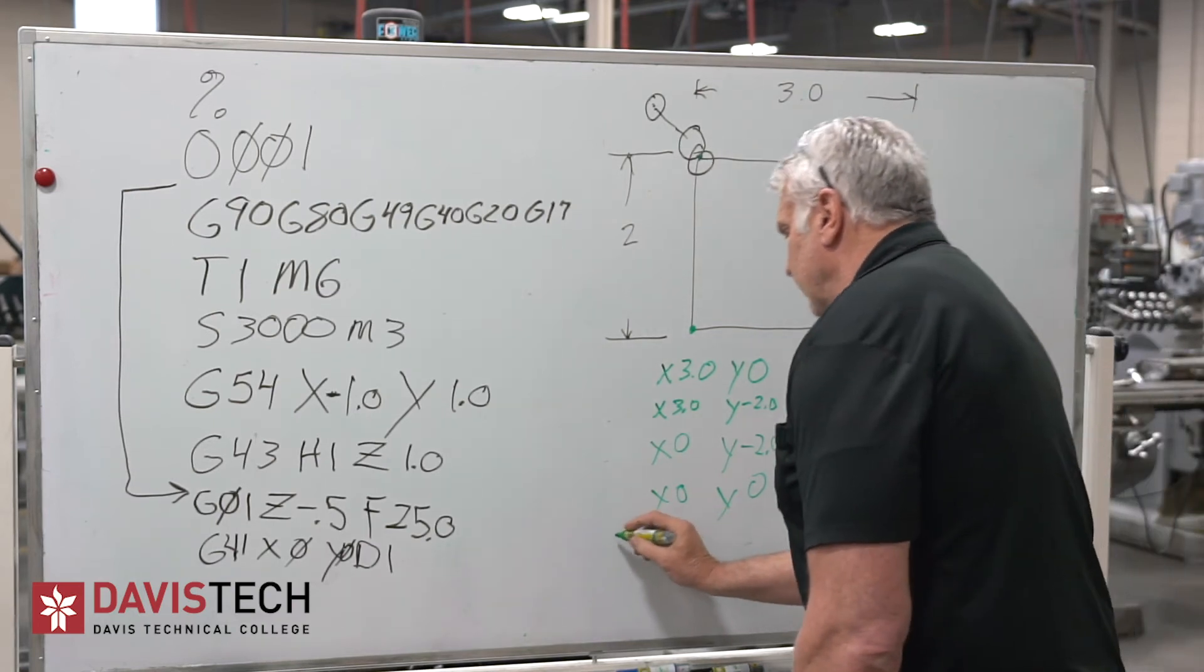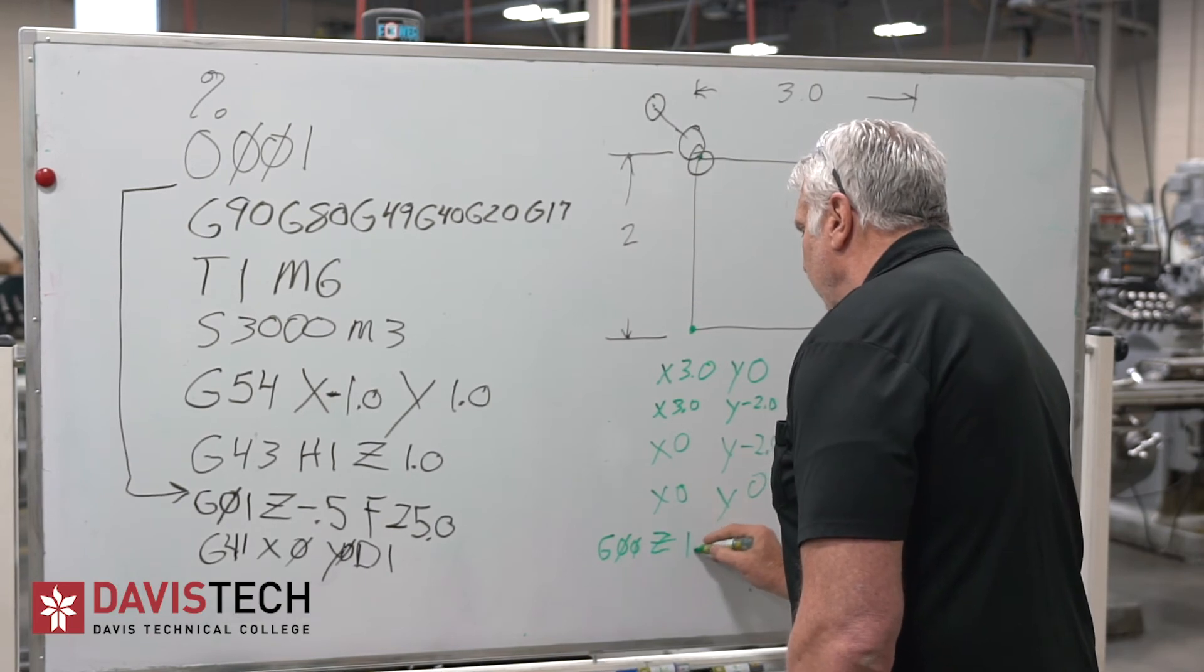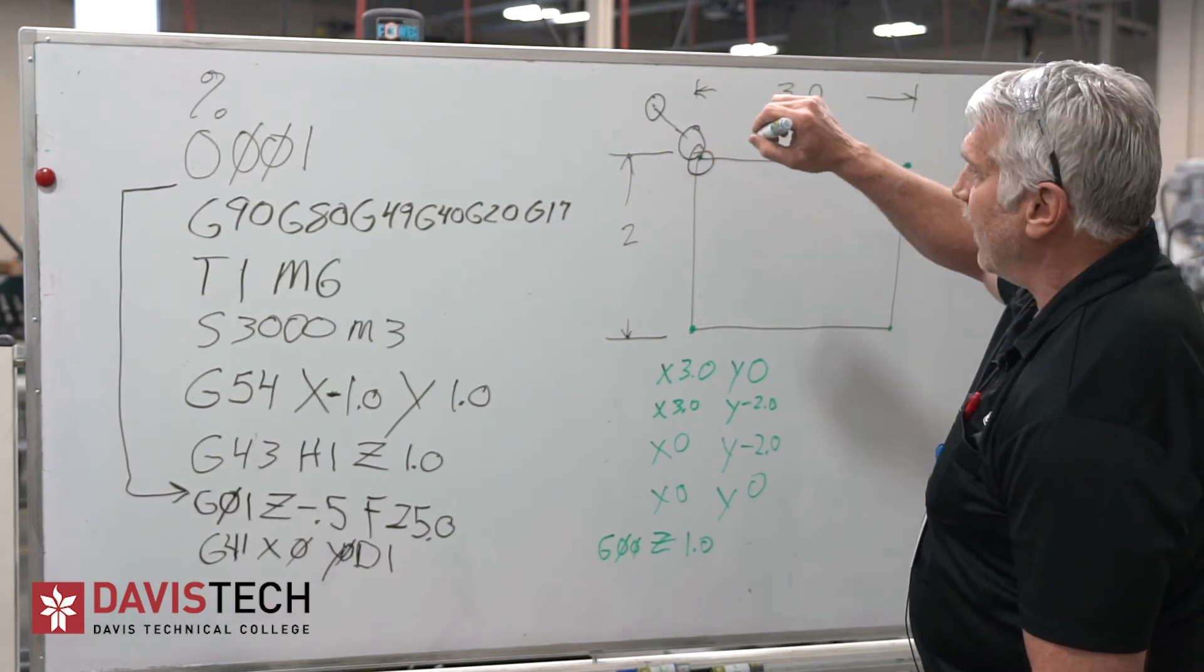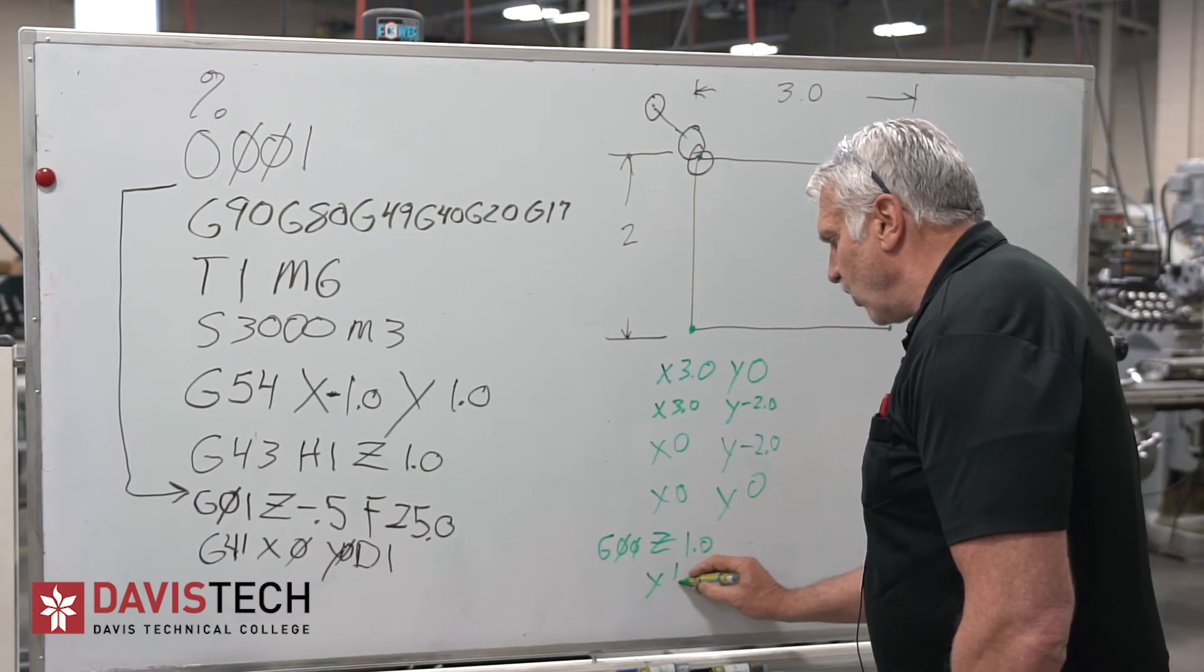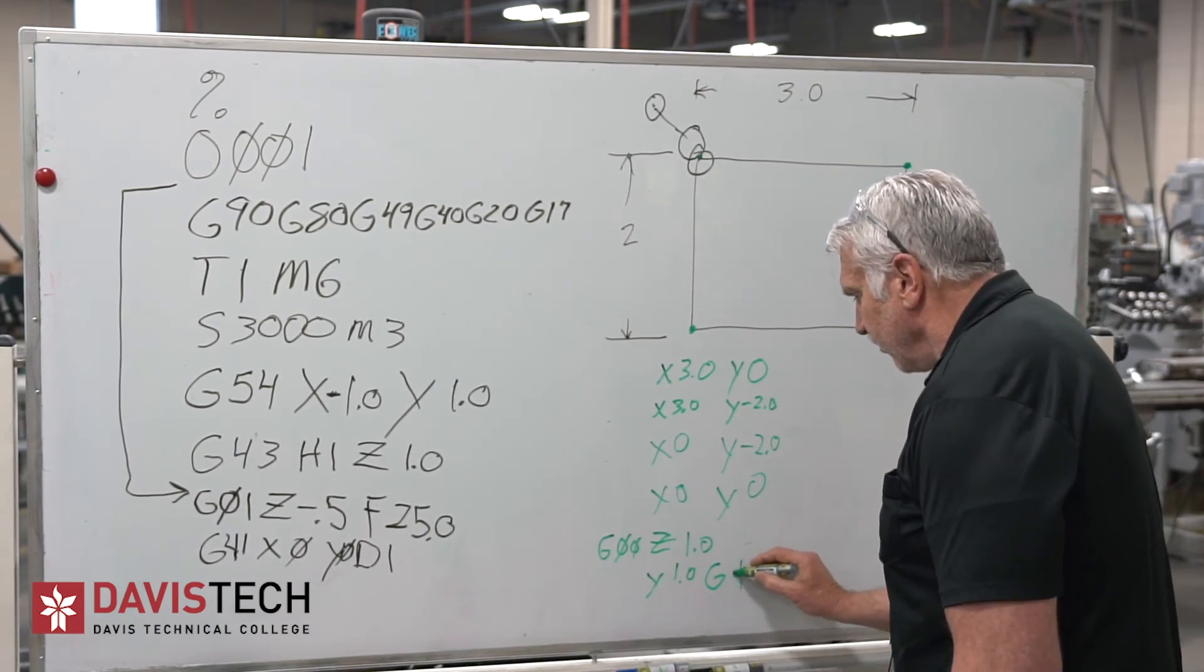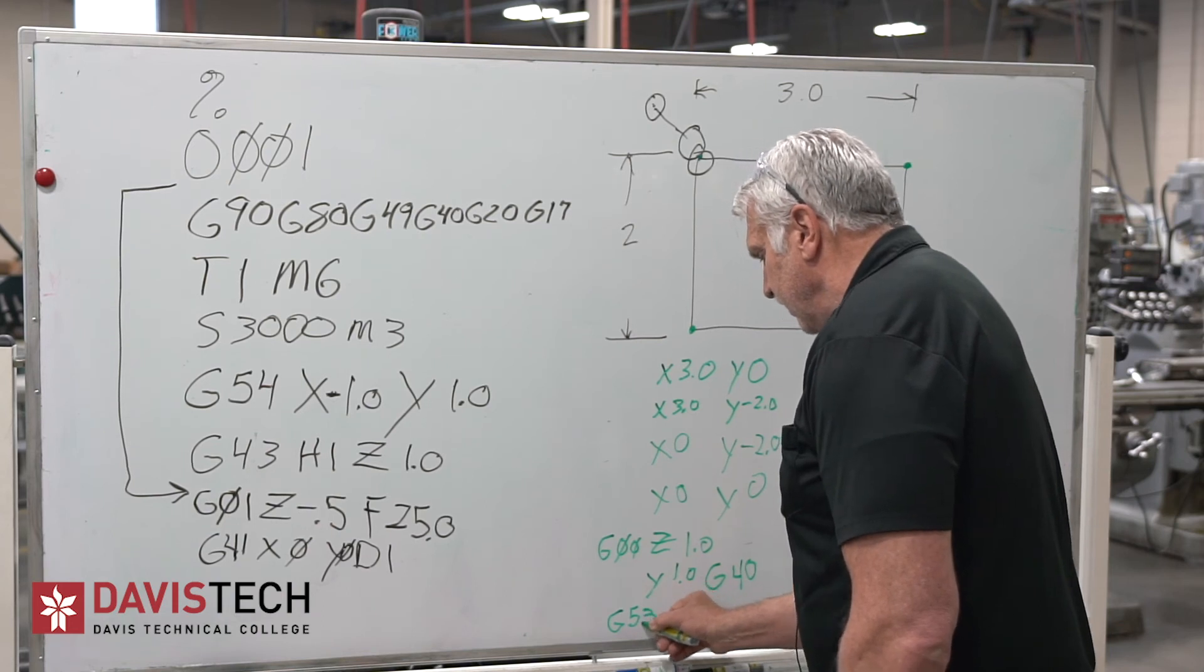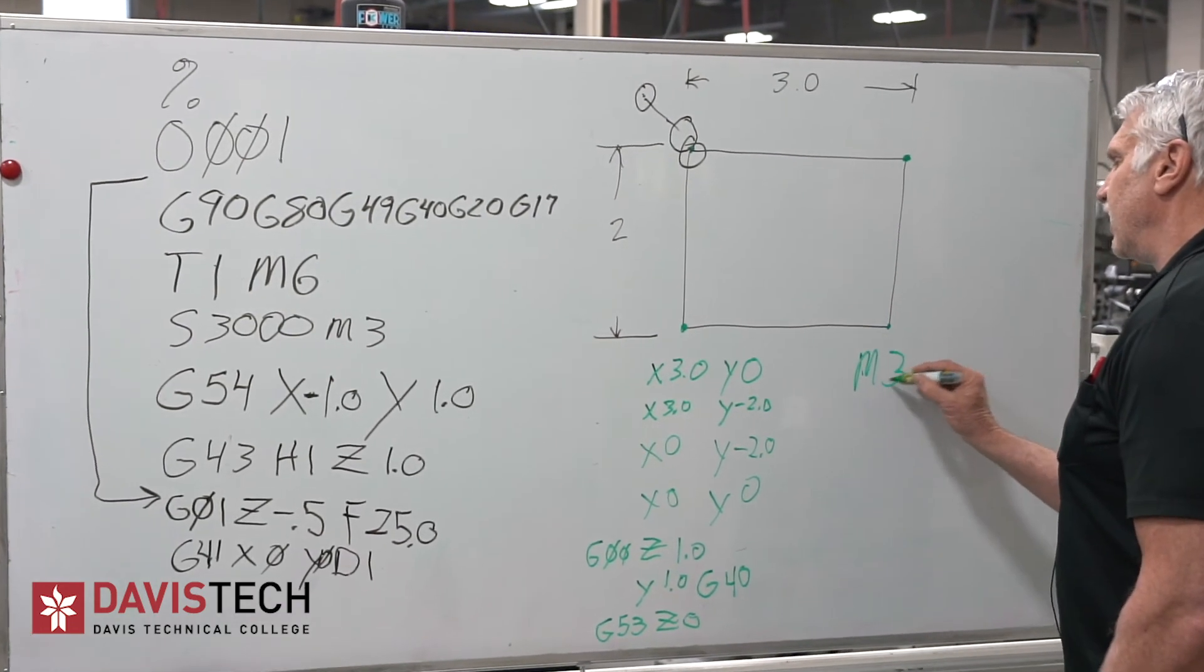My next move I'm going to make, I'm going to say rapid G0 to Z of let's say one inch above the part. And then I'm going to cancel my cutter comp. I activate it with the G41 right here and I'm going to deactivate it because after I've come to that point, I'm going to lift up and you need to deactivate it. So I'm just going to move to let's say X of one. We'll say that's a Y of one inch in the positive with a G40. Now I've cancelled my cutter comp and I want to send it home or change tools or something of that nature. And I'm going to put in a G53 and a Z zero. And then my last line will be M30. End of program, restart.